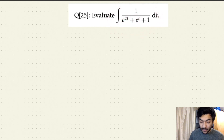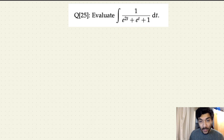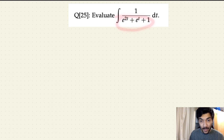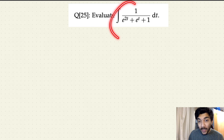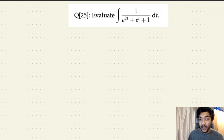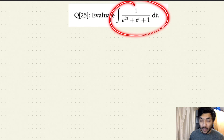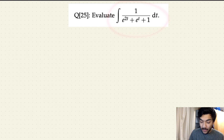In this expression, you see an exponential function. In the denominator, you have a quadratic expression, but it is in terms of the exponential function. If we substitute e to the power t as x, we can write this denominator as simply x squared plus x plus one. And we know that when we have quadratic expressions in the denominator, we usually use partial fractions to solve those integral problems. So let's do that.